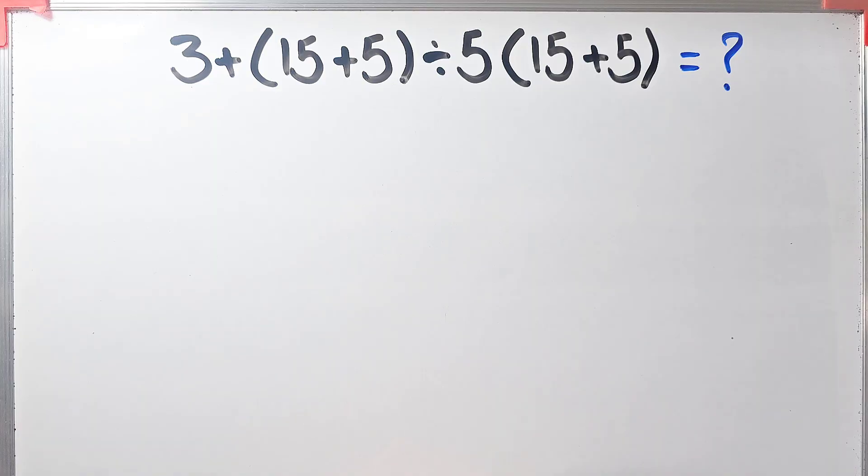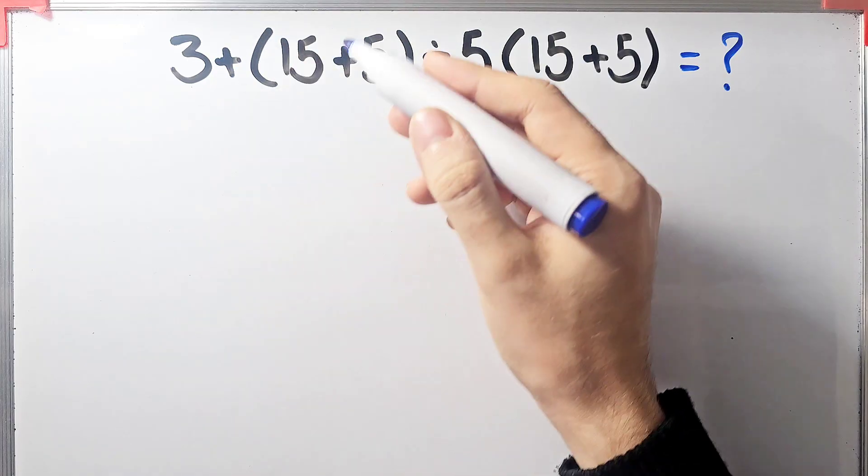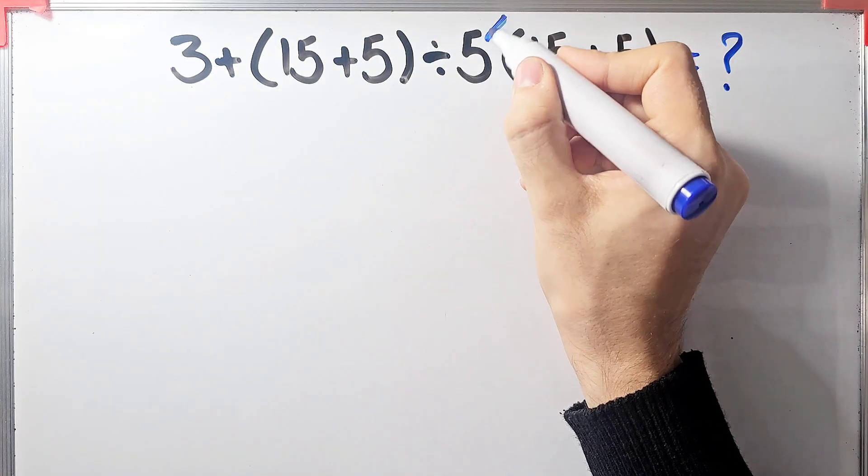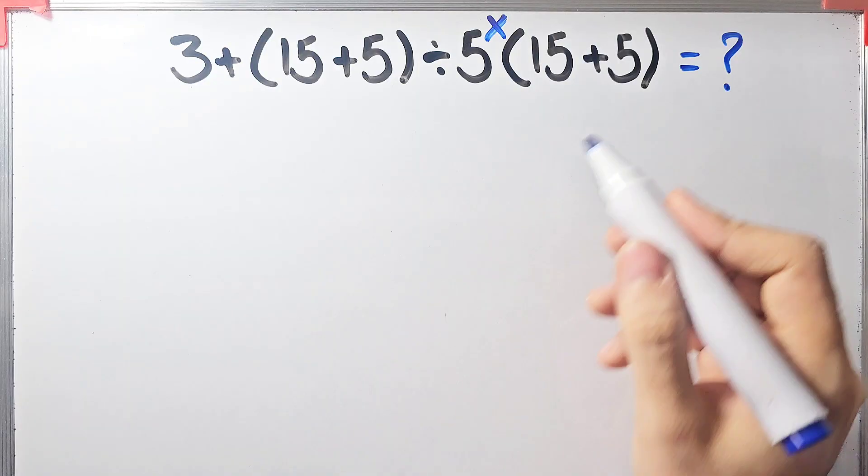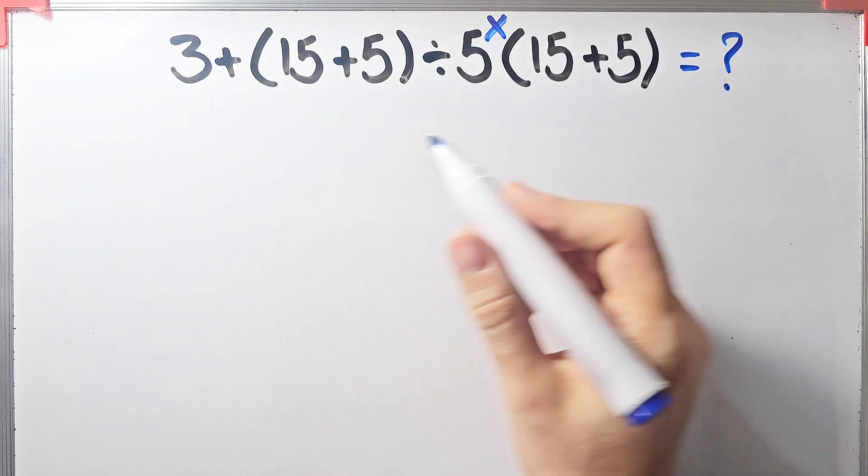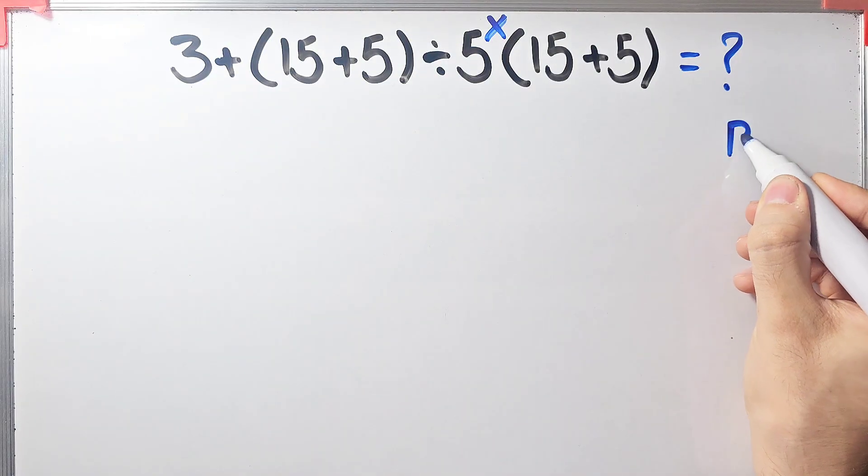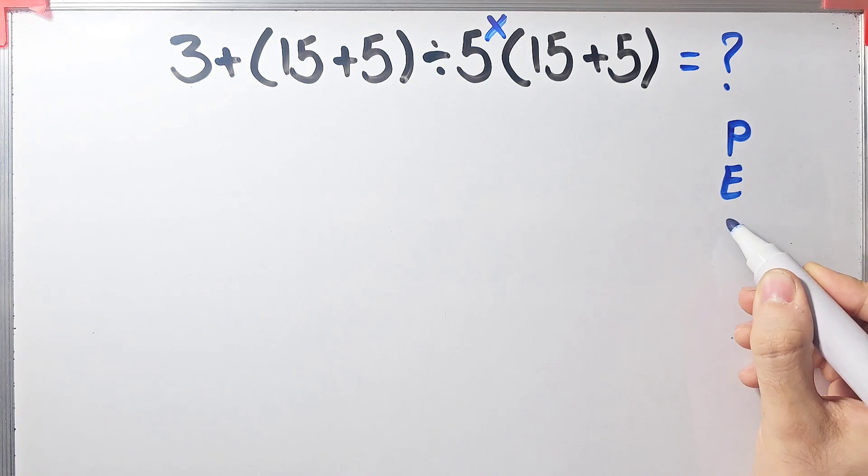What is the answer of this question? In this question we have addition, parenthesis, division, and multiplication. To solve this question we need to follow the order of operations, which is PEMDAS. PEMDAS shows the priority of the mathematical operations.